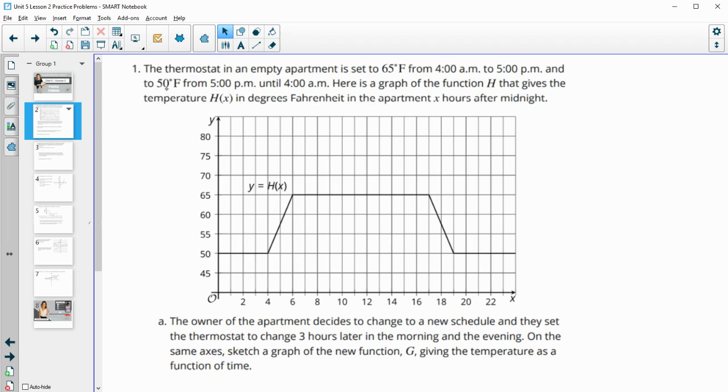And then it's moved down to 50 degrees from 5 p.m. until 4 a.m. So this is the graph that represents it. We're calling it H of X.